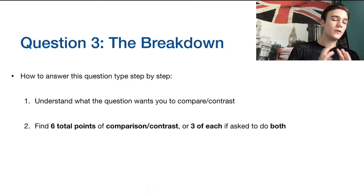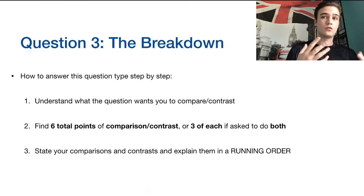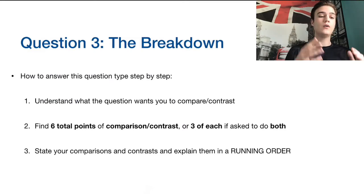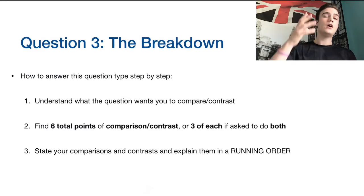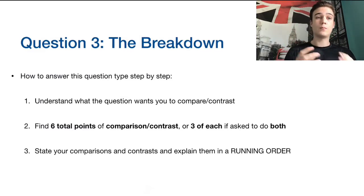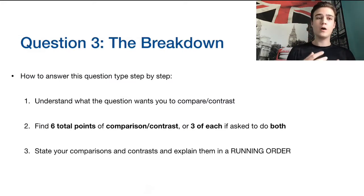The third step is that you have to write your answer in a manner which is easy to follow. This is especially important for this question because there's more analysis and writing involved. You want to explain your ideas in a running order — a running order simply means having all the similarities together and all the contrasts together, not mixing them up. You don't want one similarity, one contrast, two contrasts, one similarity. Have three similarities and then three contrasts immediately after each other.